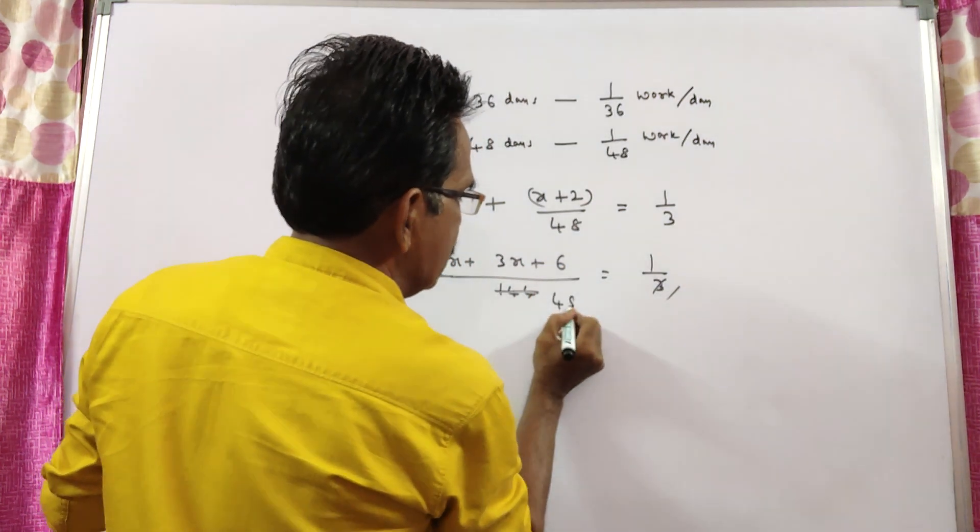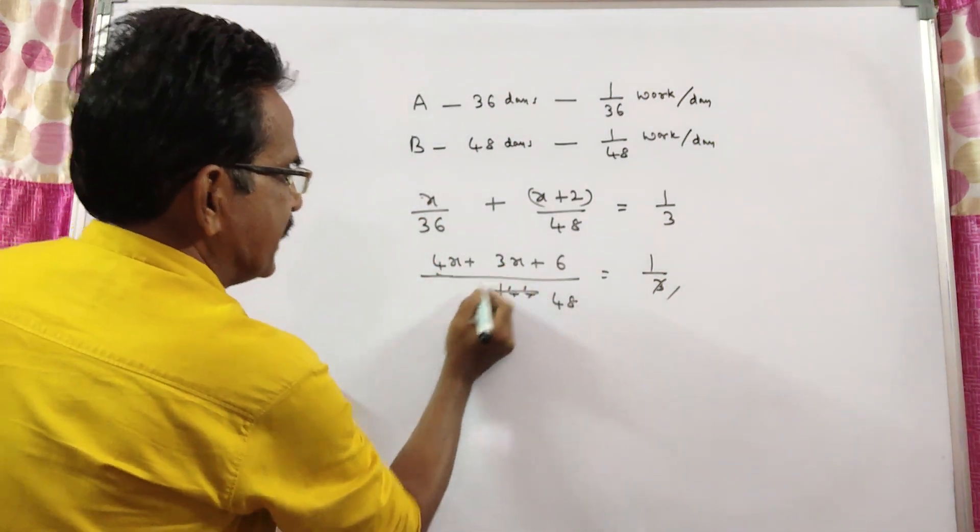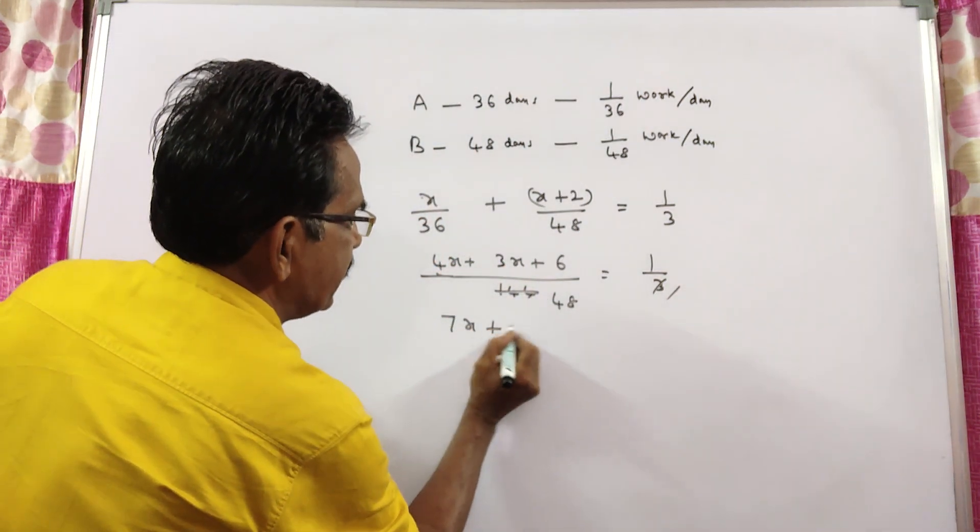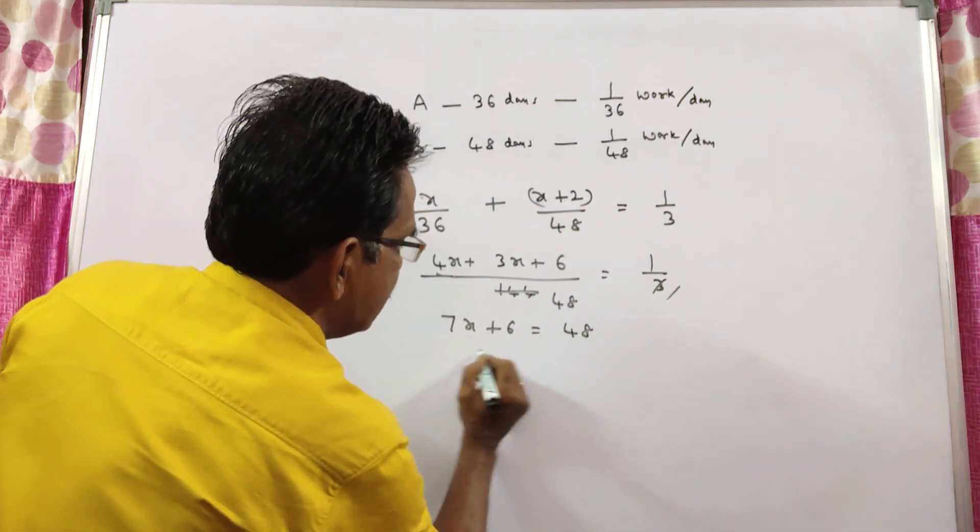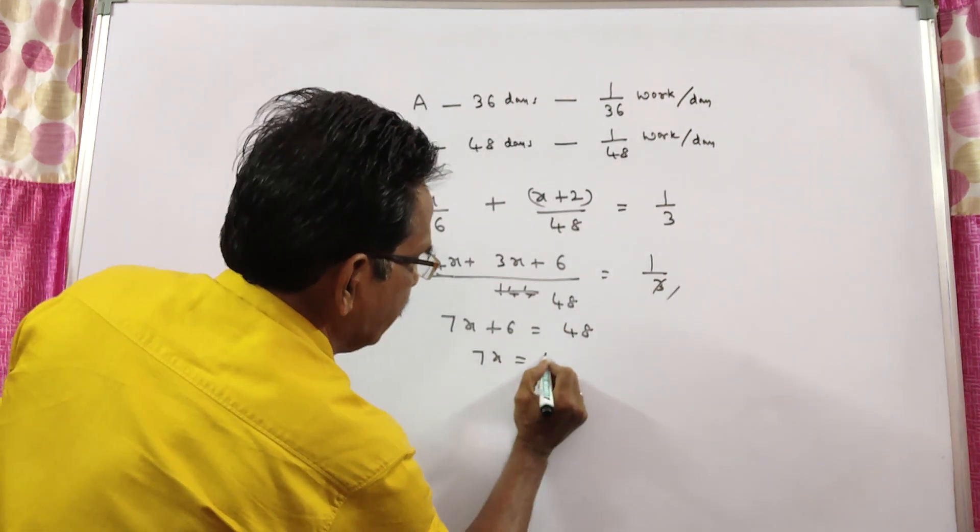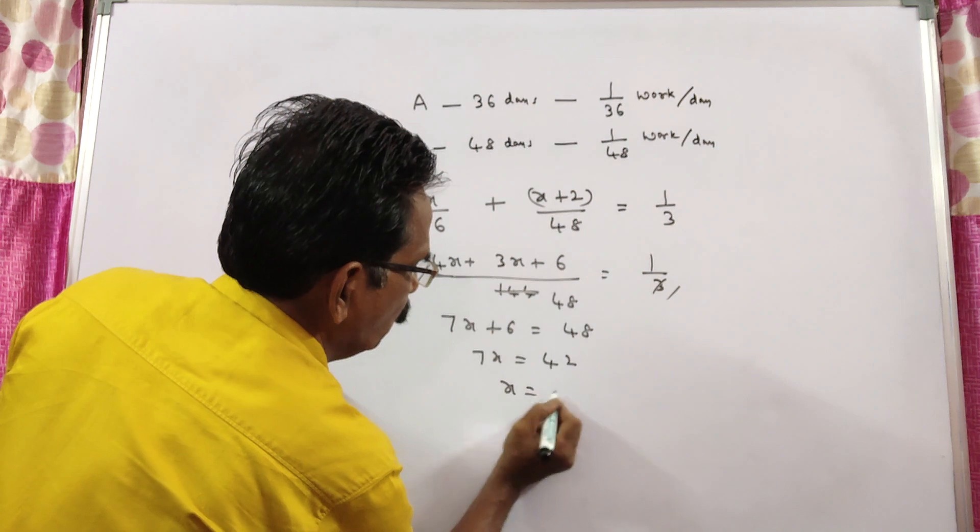So, 7X plus 6 equals 48, 7X equals 42, X equals 6.